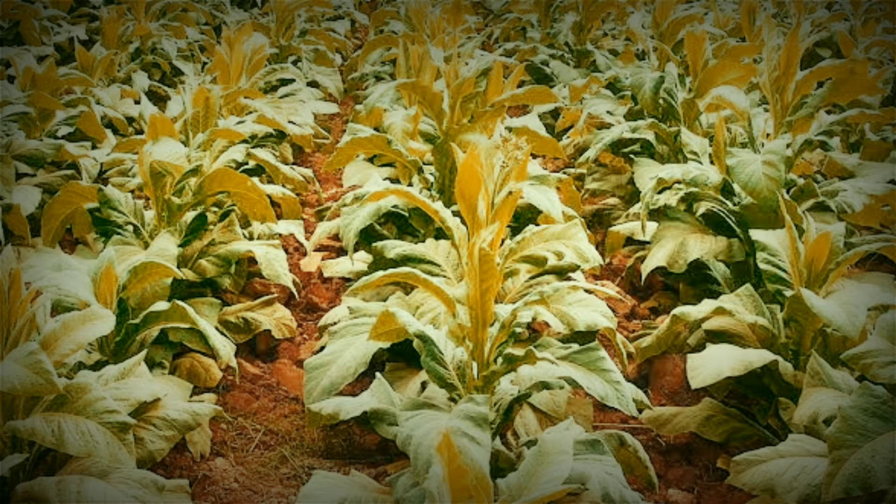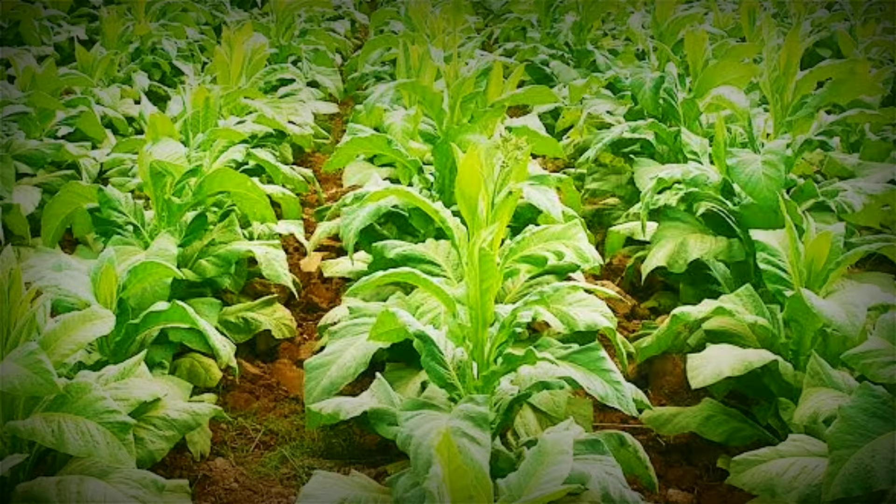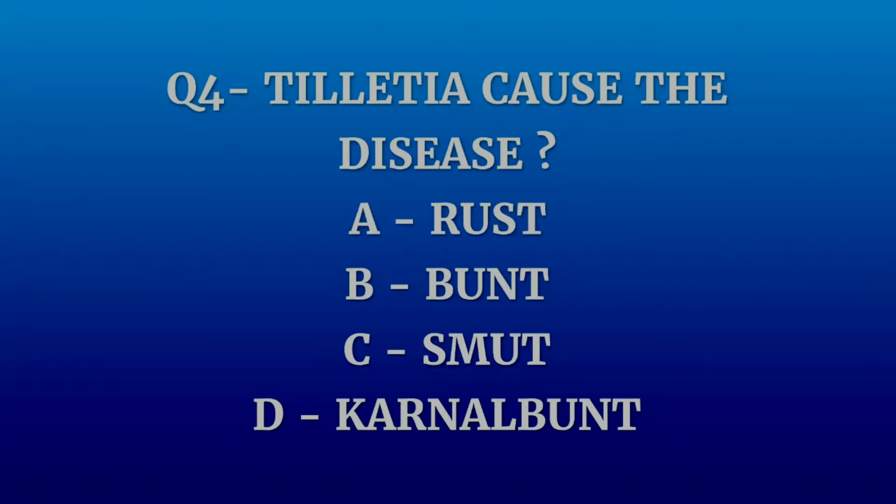Please note some important points about tobacco: the family of tobacco is Solanaceae, roots of tobacco plant synthesize nicotine, and top sickness of tobacco is due to boron deficiency. Question number four: Tilletia causes which disease? Options are rust, bunt, smut, or karnal bunt. The correct answer is bunt.